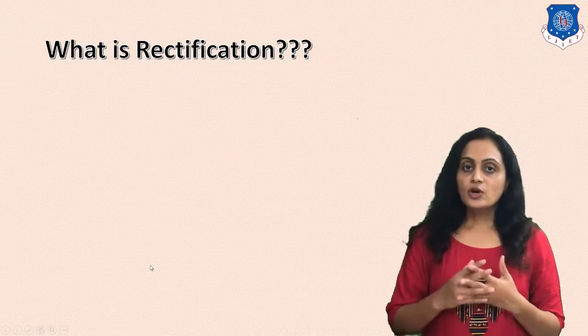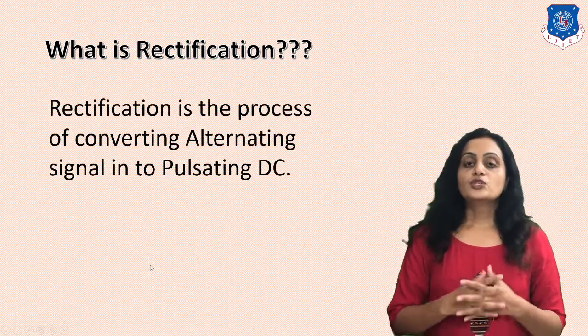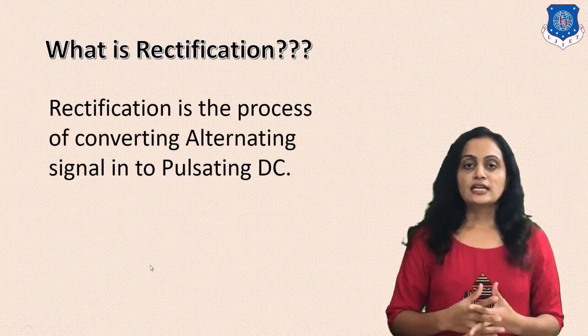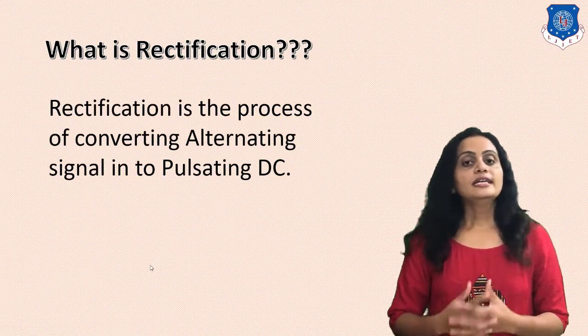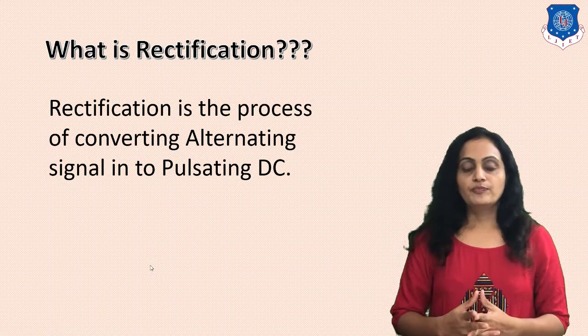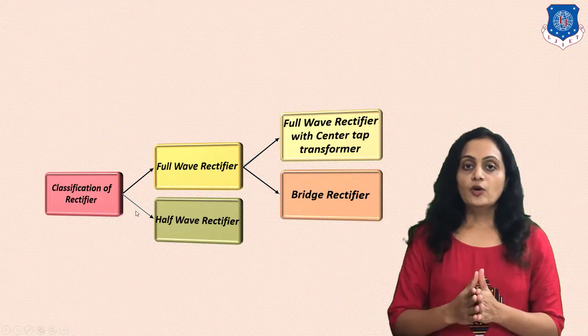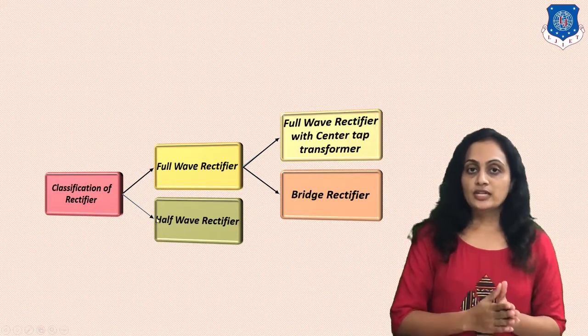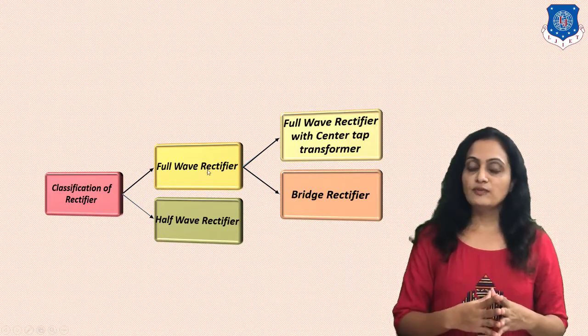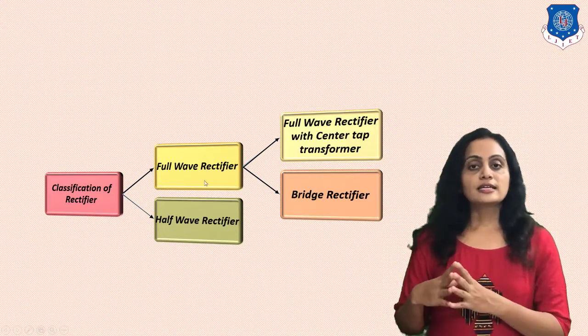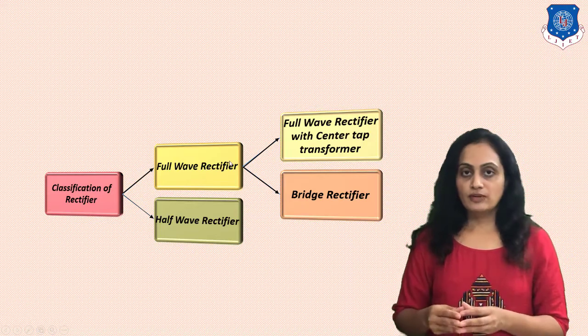Now, what is rectification? Rectification is the process which converts the alternating signal into the direct signal. Now we will see the classification of rectifiers. Basically there are two types: one is the half wave rectifier and the second one is the full wave rectifier.